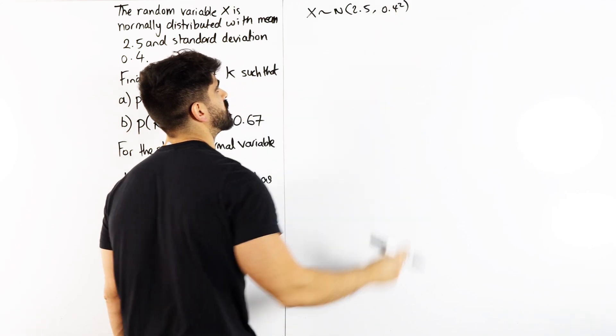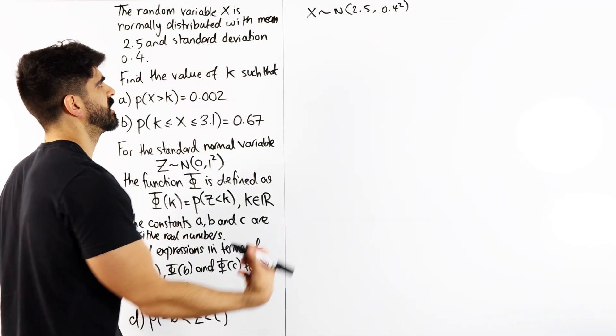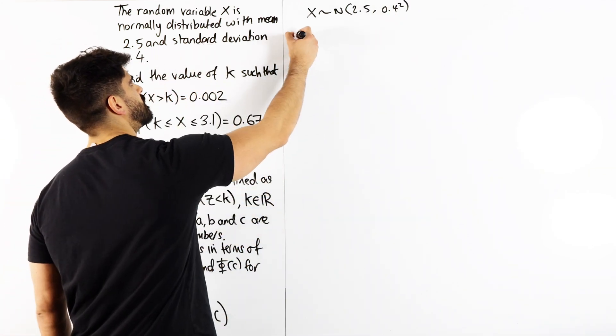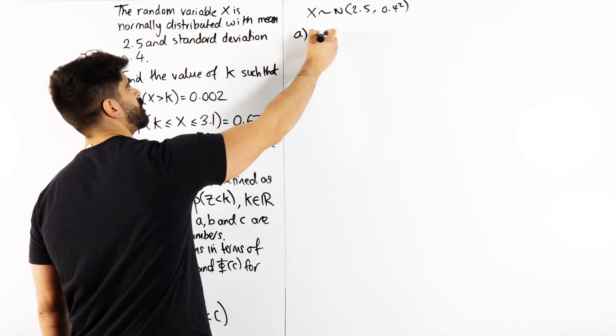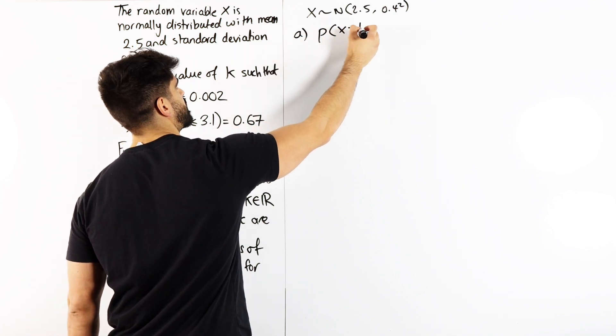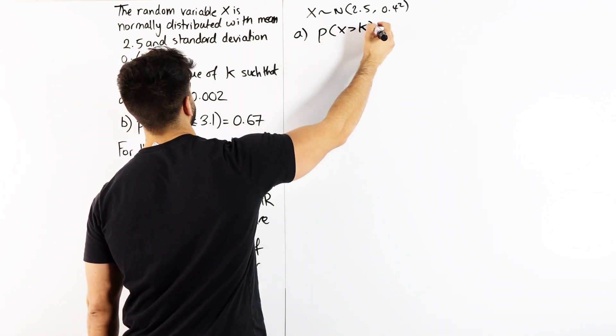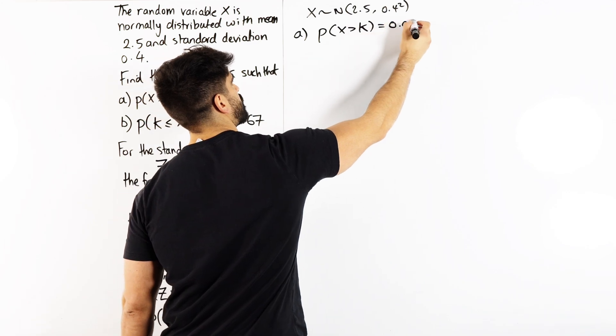Now here we use the variance. For part a, they want to find the value of k such that the probability that x is greater than k is 0.02.